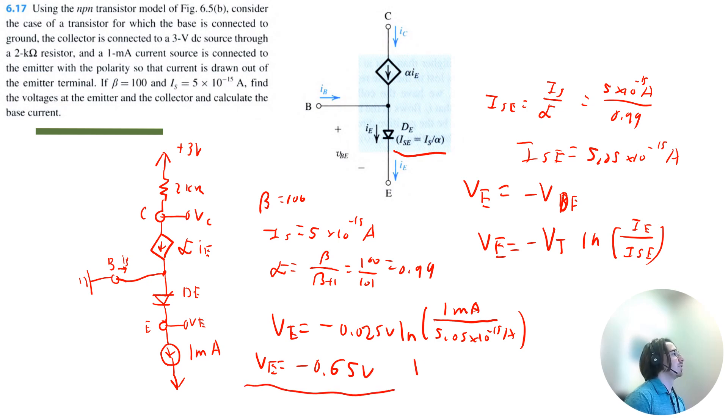We can solve the collector voltage pretty easily by taking 3 volts and subtracting the collector current times 2 kilohms, which equals 3 volts minus the collector current expressed as alpha times the emitter current times 2 kilohms. So it equals 3 volts minus alpha, which is 0.99, times the emitter current of 1 milliamp, multiplied by 2 kilohms. So I get a collector voltage of 1.02 volts.